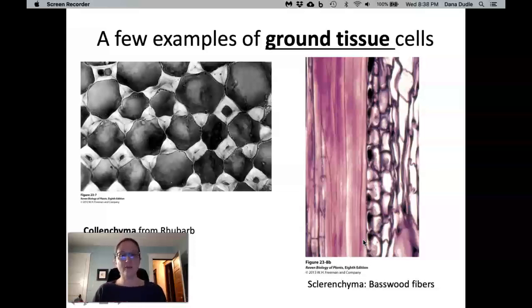are full of sclerids, which have thick secondary cell walls that protect that seed from predators quite effectively. So that's all I'm going to say about those two tissues.